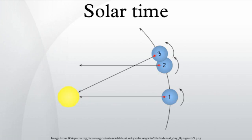The length of the mean solar day is slowly increasing due to the tidal acceleration of the Moon by the Earth and the corresponding slowing of Earth's rotation by the Moon.